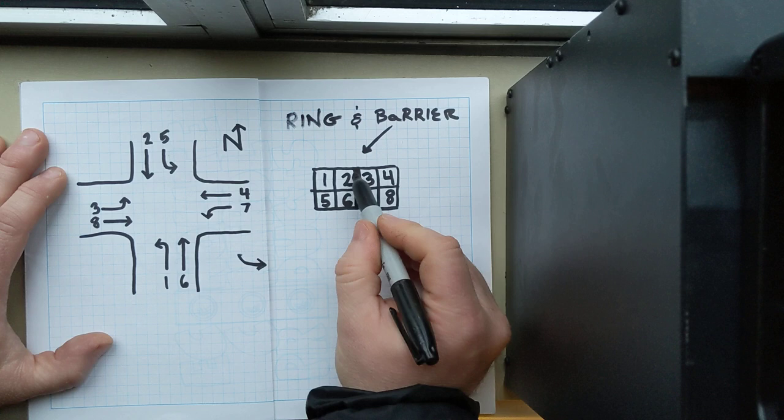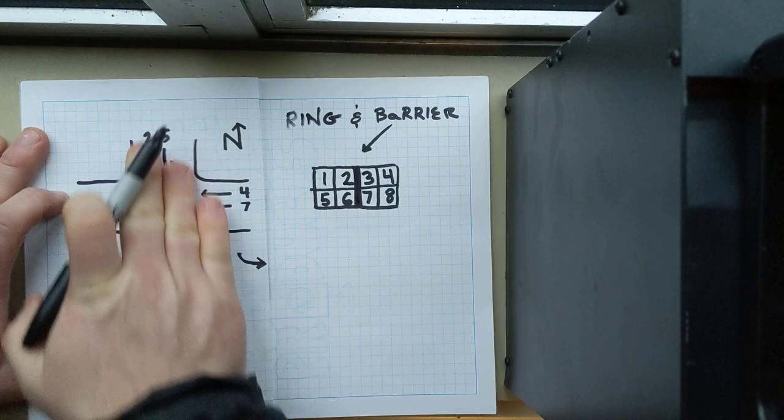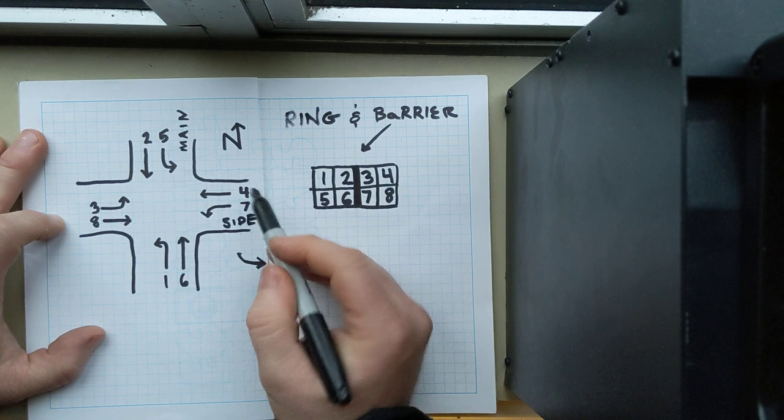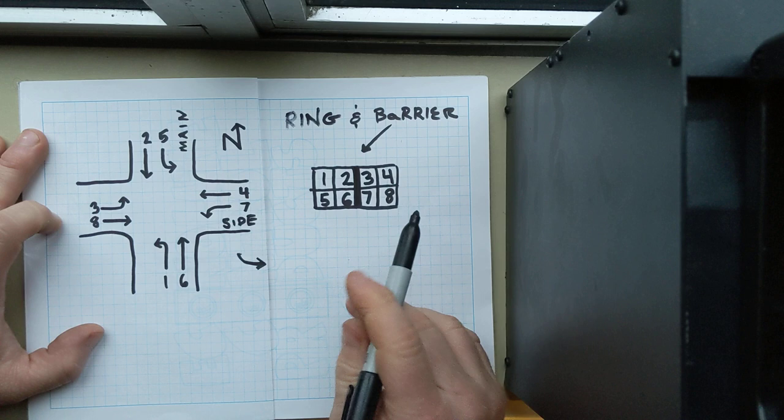And what the barrier is, basically, is to separate, as you can see, the phases that are on the main street. Let's call this main street. And side street. But, basically, so that conflicting phases stay separate from each other in the realm of sequencing the intersection.